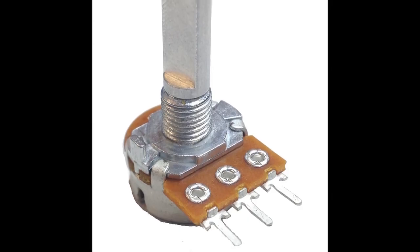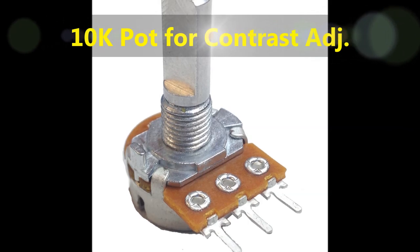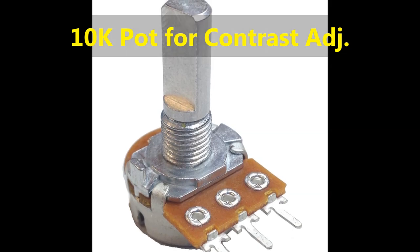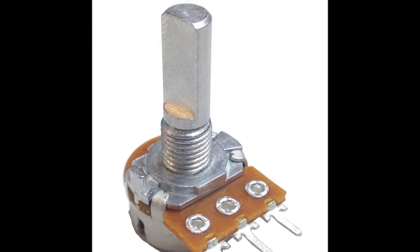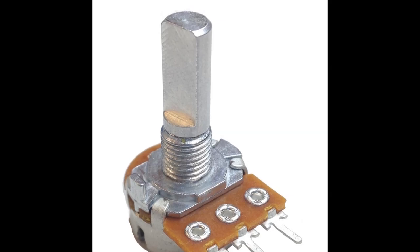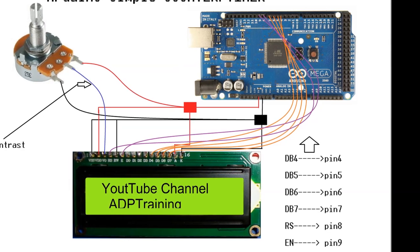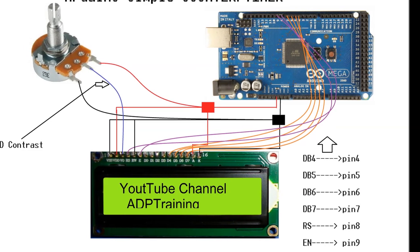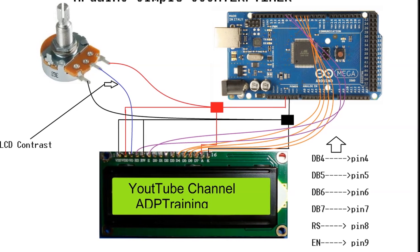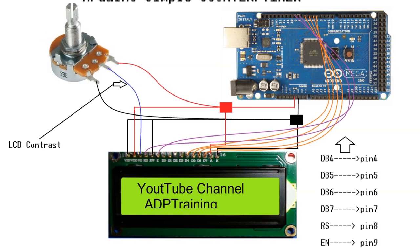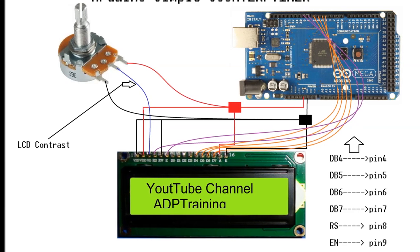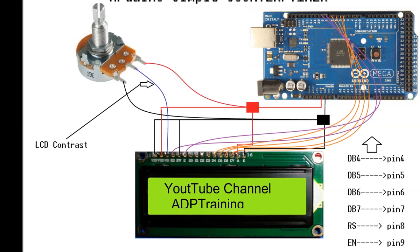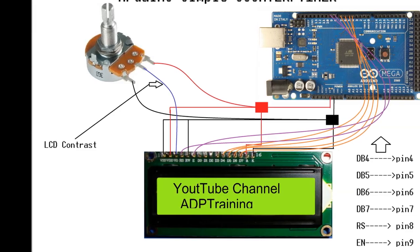We're also going to need a 10K potentiometer here. Anything from 5 to 50K will do, but the potentiometer is used for adjusting the contrast on the LCD screen. On screen now, you can see the way you interconnect the LCD screen to the Arduino and the potentiometer. This is covered in the video that we mentioned before on the Arduino simple counter timer. This is the way you basically connect the display to the Arduino, and then later on, we're going to go into the details on how to connect the relay cards.